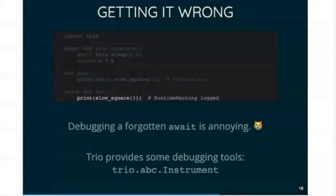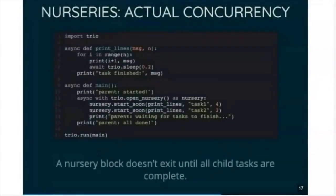So how does Trio actually do the structured concurrency? The main thing here is it's called a nursery. So instead of having the equivalent of async.io.createTask, which you can call anywhere, the only way to create a background task is to use a nursery.